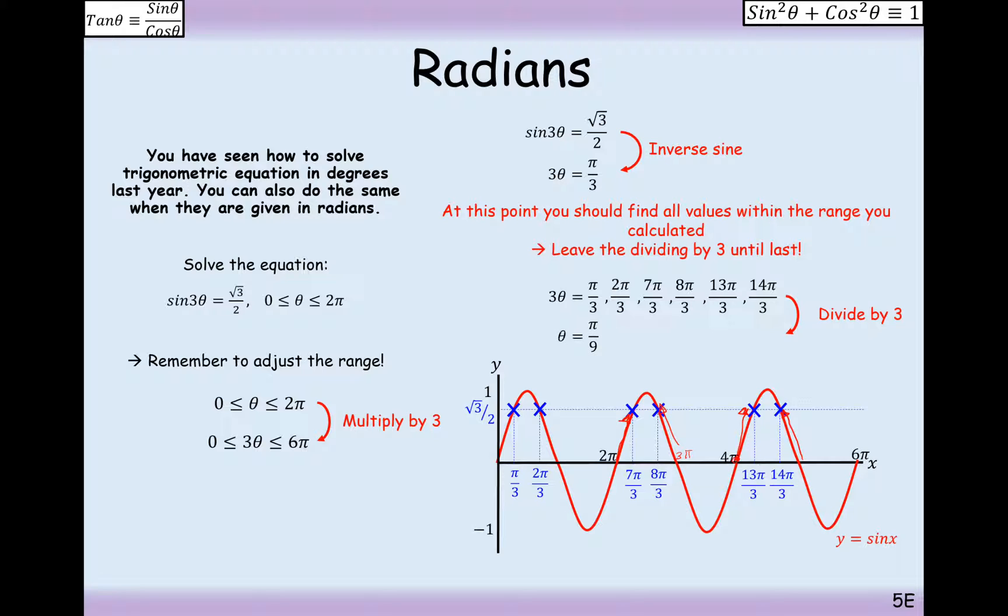it's going to be θ equals π/9, 2π/9, 7π/9, 8π/9, 13π/9, and 14π/9. And all of those angles there will give you, once we've signed them, times them by 3 and sign them, √3/2. And you can check any one of them to make sure you've got them correct.